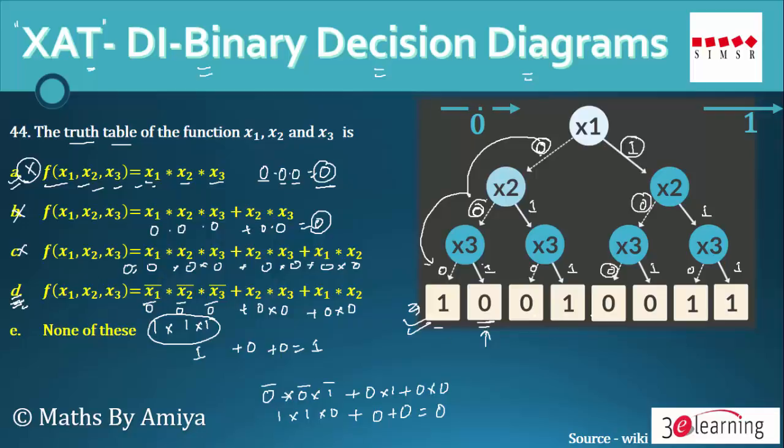We have to check with the other values, even check with 1, 1, 1, are we getting 1 or not? So 1 complementary, 1 complementary, 1 complementary is nothing but 0 into 0 into 0 is 0, then 1 into 1 is 1 plus 1 into 1 is 1, so this becomes 2 and 2 is the on symbol, that is nothing but 1.